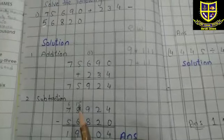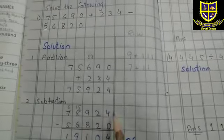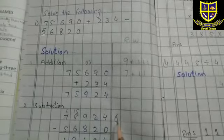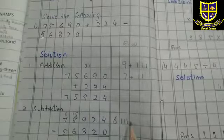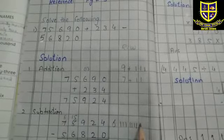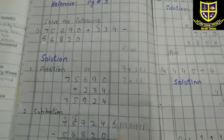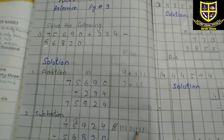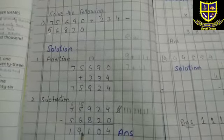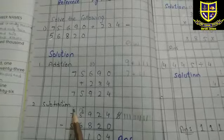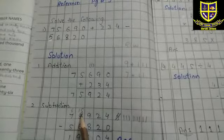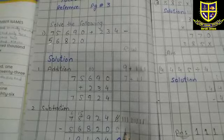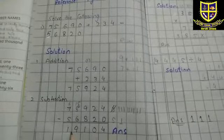Subtraction is very easy. We have fifteen and we need to subtract six. Start counting from six up to fifteen: seven, eight, nine, ten, eleven, twelve, thirteen, fourteen, fifteen. I've counted up to fifteen; now six is subtracted, so I cut it and count the remaining lines: one, two, three, four, five, six, seven, eight, nine — the answer is nine. Now in the next column, seven has become six because it gave one to make five into fifteen. Six minus five gives one. So the final answer is 19,104.